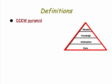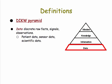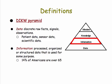Let's begin with some definitions. This is the familiar DIKW pyramid. On the bottom, you have raw data — these are signals, observations, and raw facts gathered when we collect patient data, sensor data, or scientific data. These data are unstructured. At the next level up, we have information: data that's been processed, organized, or structured in some way, and that's used for some purpose — for example, to determine how many Americans are above the age of 65.